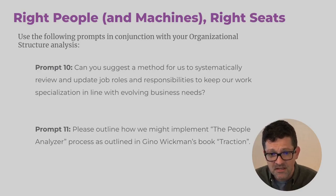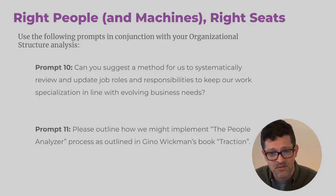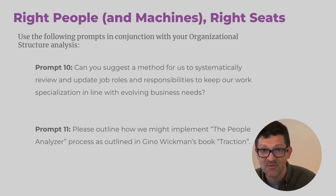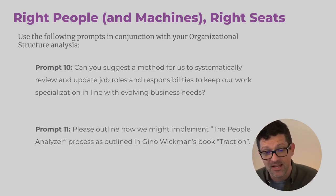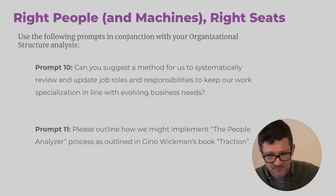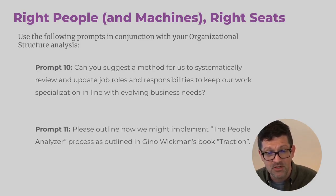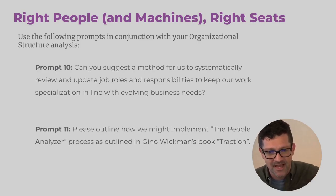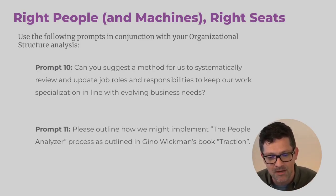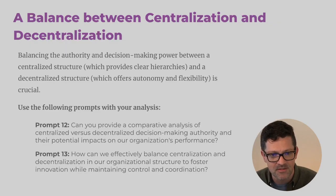Prompt ten: Can you suggest a method for us to systematically review and update job roles and responsibilities to keep our work specialization in line with evolving business needs? Prompt eleven: Please outline how we might implement the people analyzer process that is outlined in Gino Wickman's book Traction. Highly recommend you check out that book, and then you can use ChatGPT as your coach — once you have that organizational structure analysis in its memory — to help you implement some of these things.